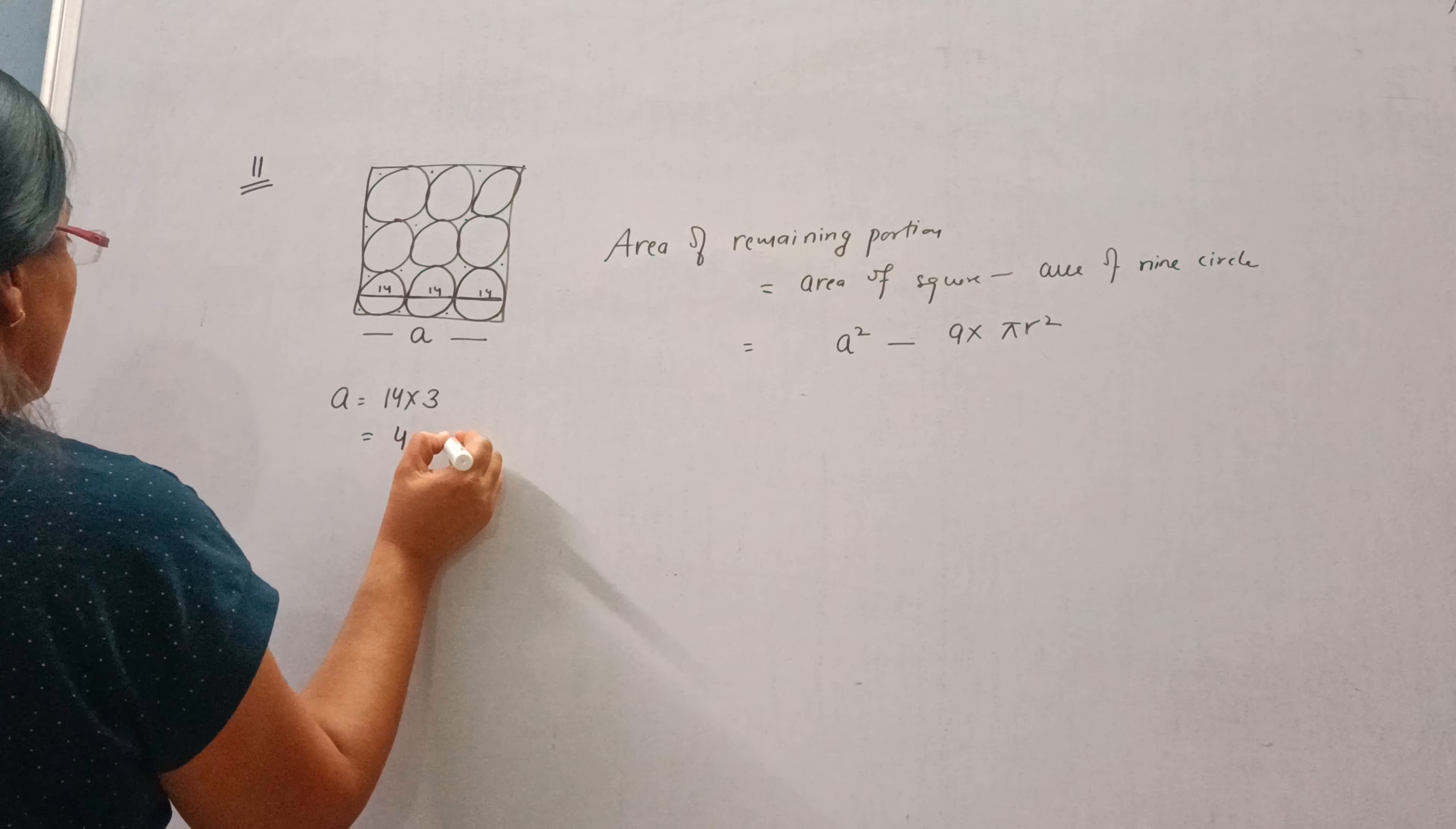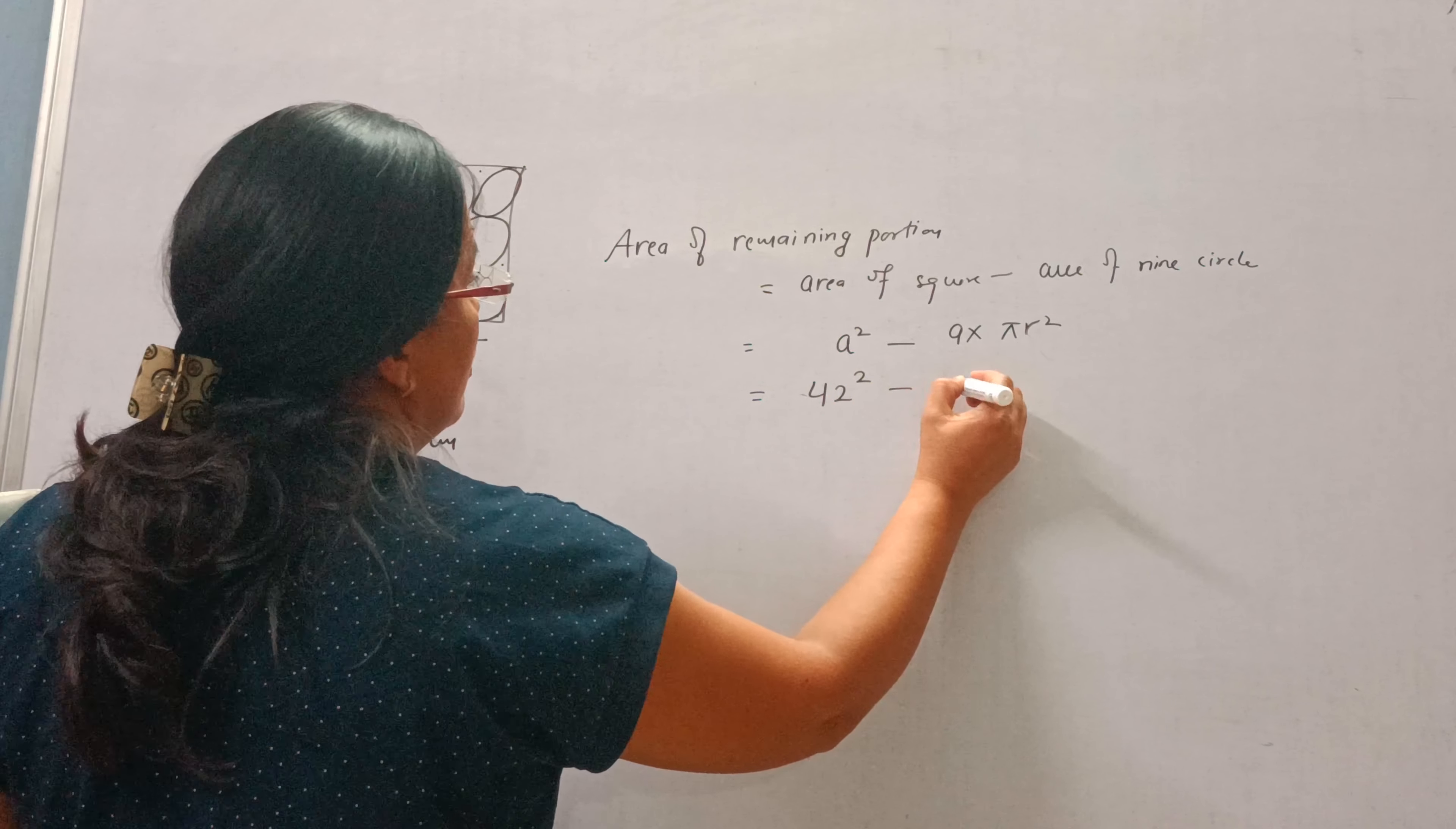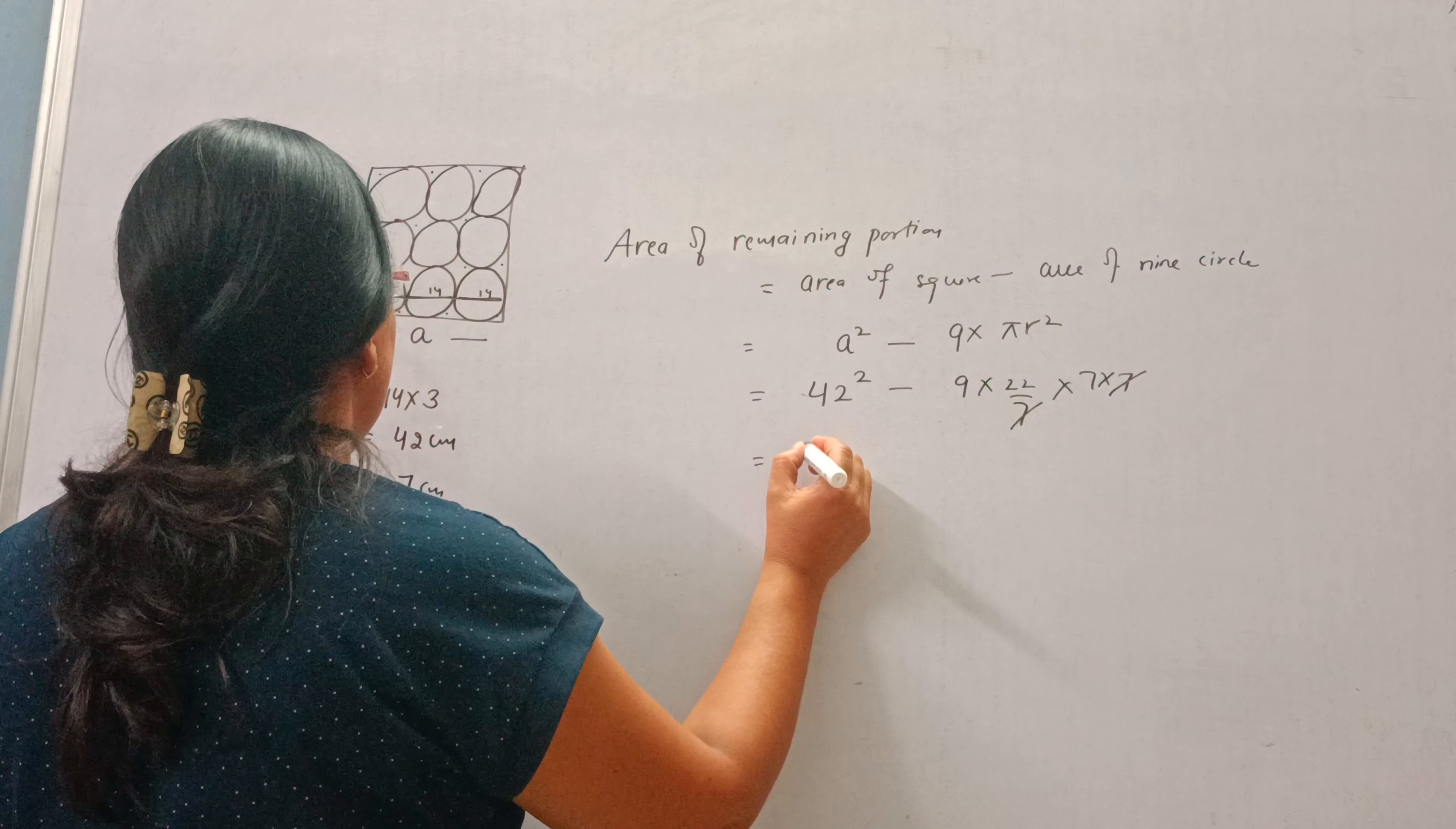Side is 42 cm and radius is given as 7 cm. So let's put these values: 42 squared minus 9 into 22 by 7 into 7 into 7.